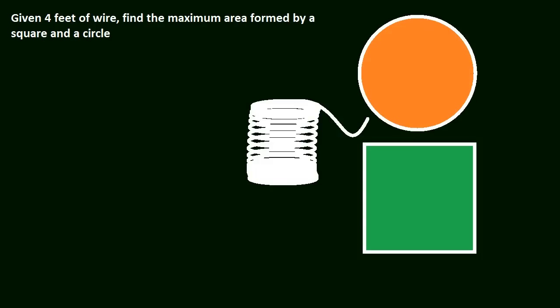Let's do another optimization problem. So here we have a spool of wire and we're given 4 feet of the wire to create a circle and a square. And we want to find out when we have a maximum area. How much of the wire should go to the square and how much should go to the circle.